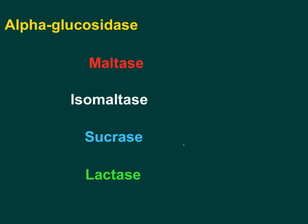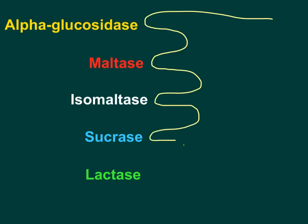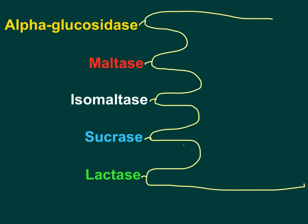Now let's see what happens to oligosaccharides, maltose, isomaltose, sucrose, and lactose in the duodenum and jejunum. The brush border epithelium of the duodenum and jejunum increases surface area for absorption and has specific enzymes already embedded in it. These enzymes are not free enzymes — they do not come from the pancreas or salivary glands. One such enzyme is alpha glucosidase.